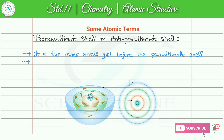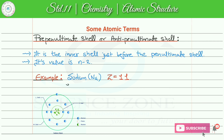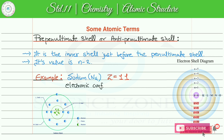We know that last shell is ultimate shell, second last shell is pen ultimate shell, and the third last shell is known as pre-pen ultimate or anti-pen ultimate shell। It is the inner shell just before the pen ultimate shell. Ultimate shell की value n है, pen ultimate shell की value n-1 थी, so pre-pen ultimate shell की value होगी n-2। Example के लिए element select कर रहा हूं, that is sodium, symbol Na, atomic number 11।